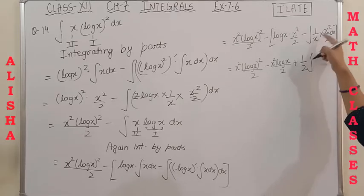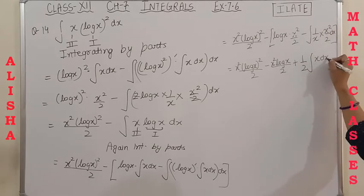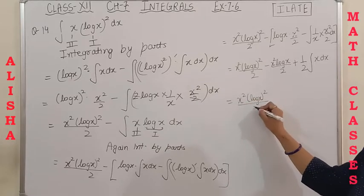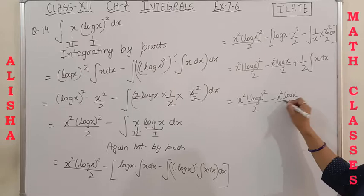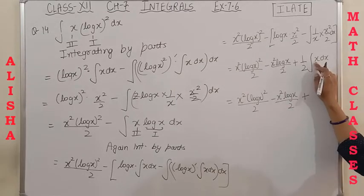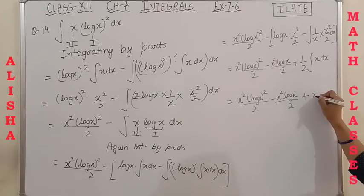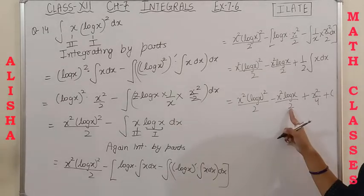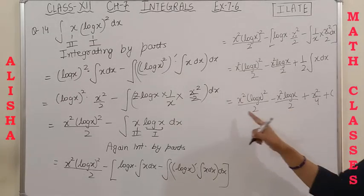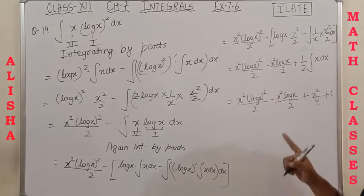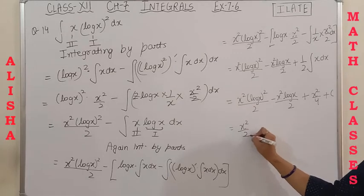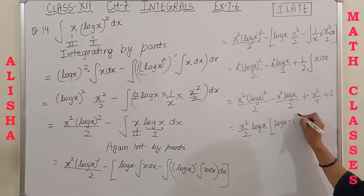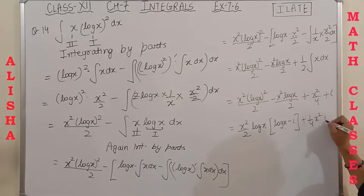You can simplify further by taking LCM as 2 and factoring out x²/2: the expression inside the bracket becomes log x − 1, giving (x²/2)(log x − 1)log x + x²/4 + C. Alternatively, taking x² as common: x²[(log x)²/2 − (log x)/2 + 1/4] + C. Please note down the answer.